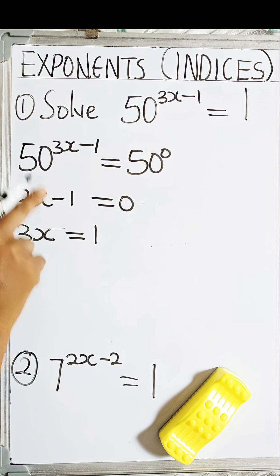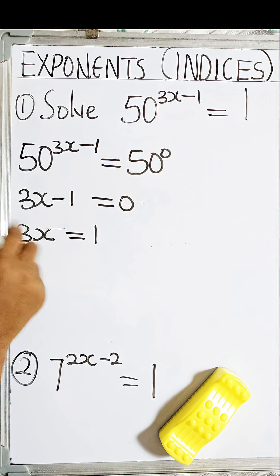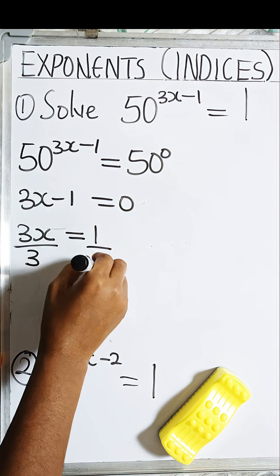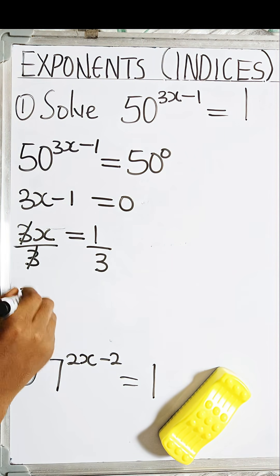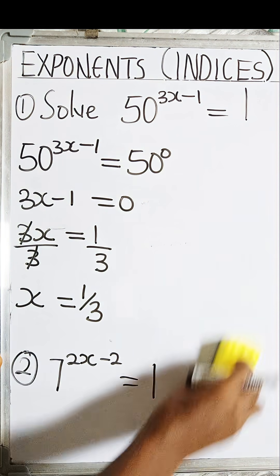Now to find x, I have to divide both sides of the equation by the coefficient of x. The coefficient of x here is 3, so I'll divide this side by 3 and I'll divide this side by 3. Now this 3 and this 3 will cancel out, so x = 1/3. What do you think about this?